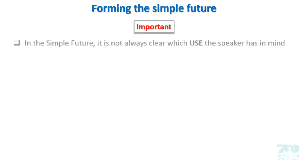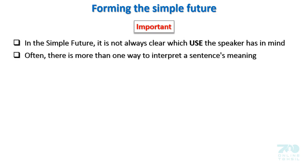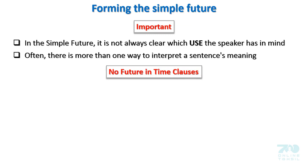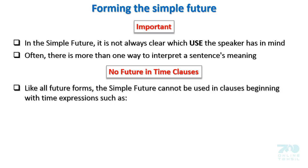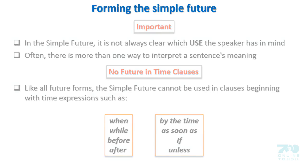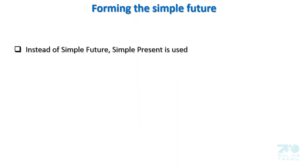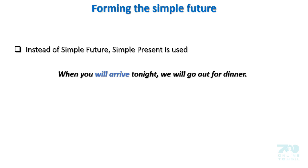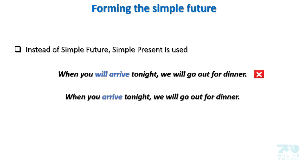Important: In the simple future, it's not always clear which use the speaker has in mind. Often there is more than one way to interpret a sentence's meaning. No future in time clauses: like all future forms, the simple future cannot be used in clauses beginning with expressions such as when, while, before, after, by the time, as soon as, if, unless, etc. Instead of the simple future, the simple present is used. Example — Not correct: 'When you will arrive tonight, we will go out for dinner.' Correct: 'When you arrive tonight, we will go out for dinner.'